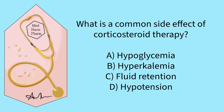A is incorrect. Corticosteroids are more likely to cause hyperglycemia, not hypoglycemia, as they can lead to insulin resistance and increase glucose production. B is incorrect. Corticosteroids can cause potassium loss and hypokalemia, not hyperkalemia. C is correct. Corticosteroids can cause fluid retention, leading to increased blood volume and potential elevation of blood pressure. D is incorrect. Corticosteroids are more likely to cause hypertension due to fluid retention, not hypotension.